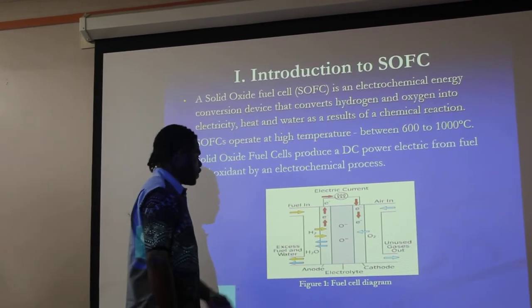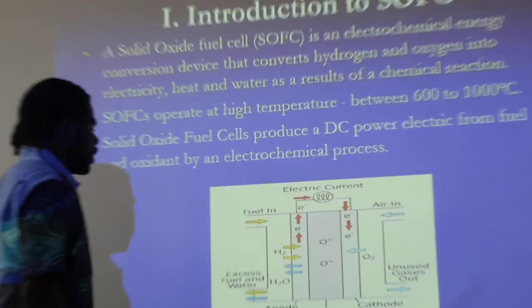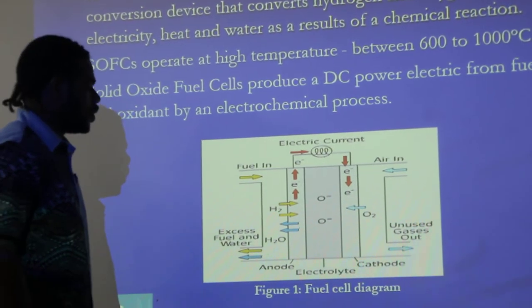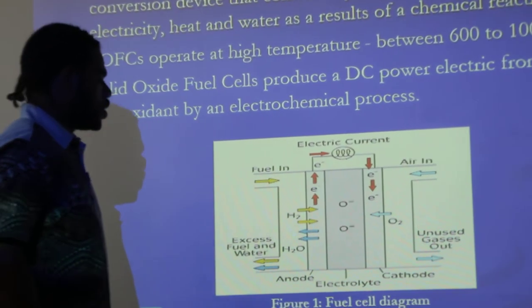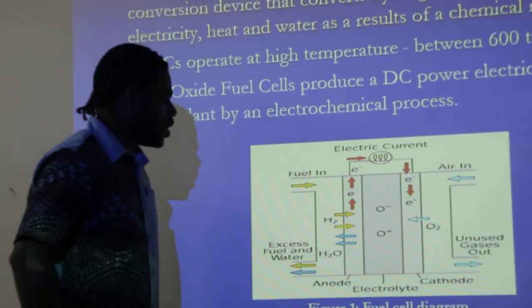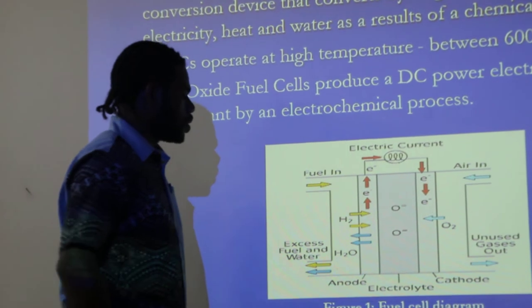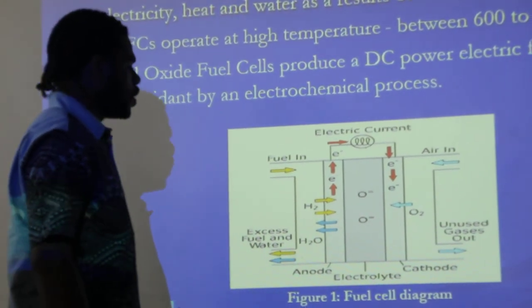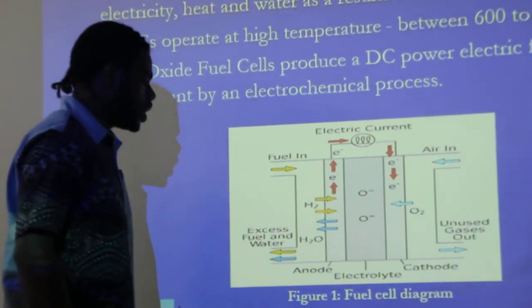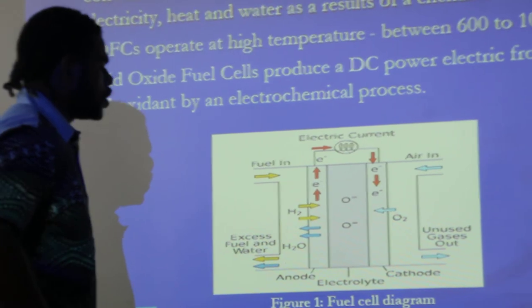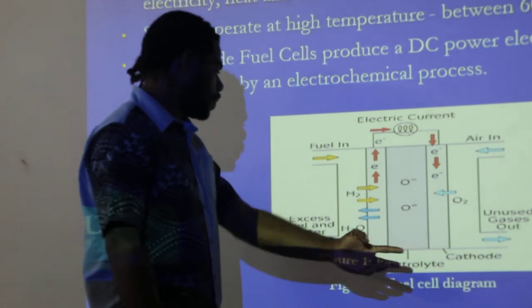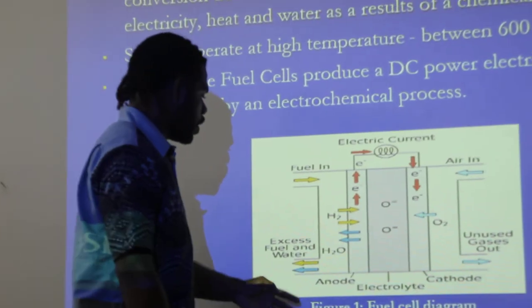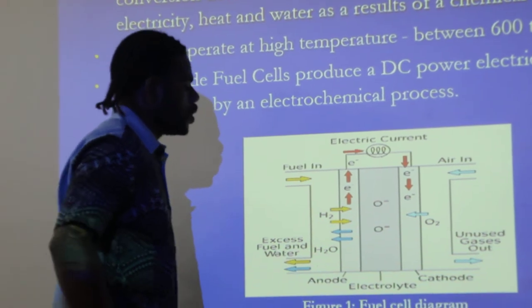From Figure 1, you can see the fuel cell diagram, which is composed of the main components of the fuel cell, which includes the cathode, electrolyte, and anode.